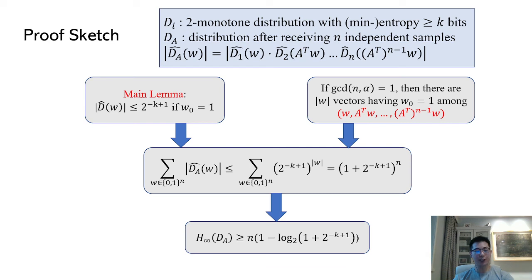So we instantiate our main lemma by taking i to be 0. This means if the first bit of a vector is 1, then the absolute value of its Fourier coefficient is upper bounded by a small constant. For any vector w, we consider the set of n vectors generated by w and A transpose. We only need to count the number of these vectors whose first bit is 1, and then use the main lemma to upper bound their Fourier coefficients. For remaining vectors, we use 1 to upper bound their Fourier coefficients.